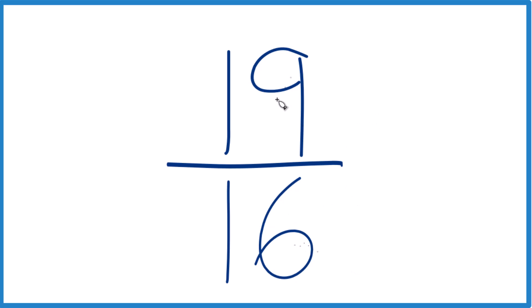The only number that goes evenly into 19 and 16 is 1. You divide 19 by 1 and 16 by 1, that's the common factor, 1, you get 19 sixteenths. So this is actually already simplified. We can't reduce 19 sixteenths any further.